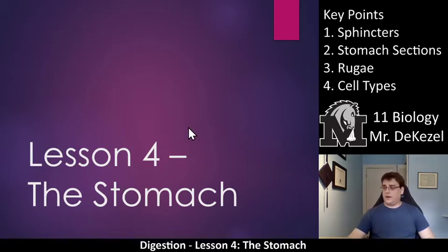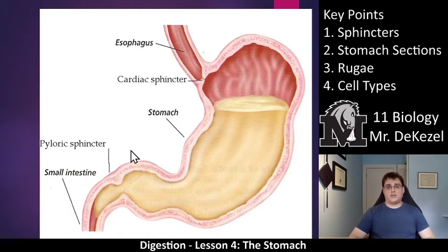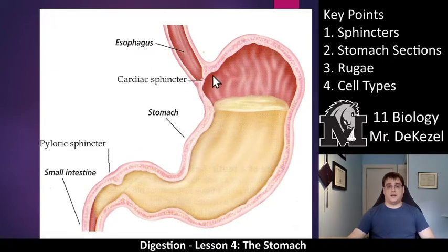So this is the first picture. You should have this in your notes. This is an overview of the stomach and it highlights two sphincters, which is our first key point. The first sphincter is at the top — the cardiac sphincter right here. So a sphincter is like a ring of muscle that is able to open and close. So the cardiac sphincter is at the top.